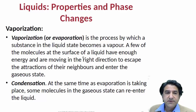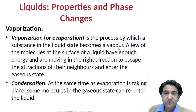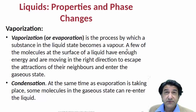What is vaporization? Vaporization is the process by which a substance in the liquid state becomes a vapor. But how does it actually happen? Well, it happens because of the different velocity distributions of the particles in the liquid.